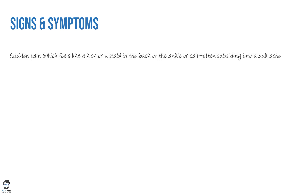The patient complains of sudden pain which feels like a kick or a stab in the back of the ankle or the calf, which often subsides into a dull ache. There is also a popping or snapping sensation — this is true with most tendons or ligaments in the body, so you need to localize where the popping or snapping sensation was.